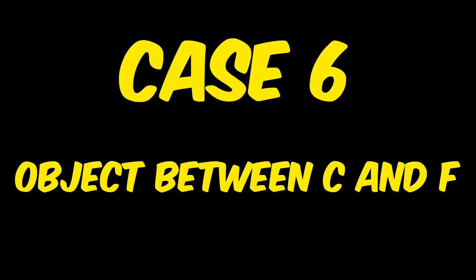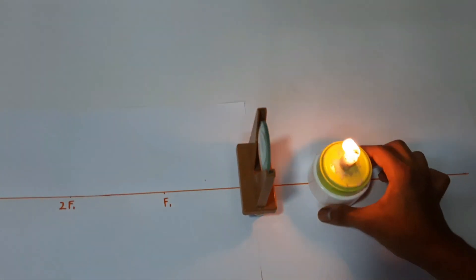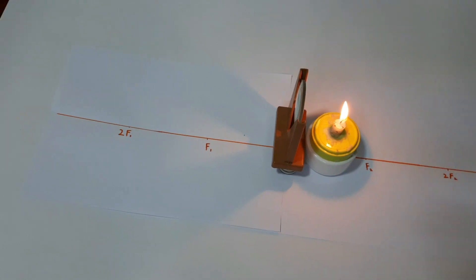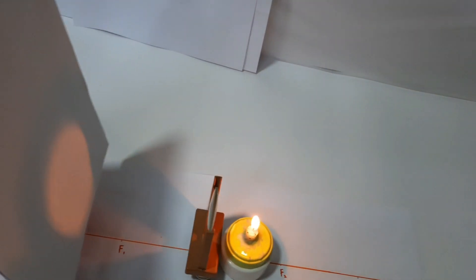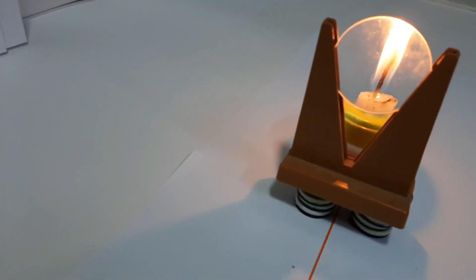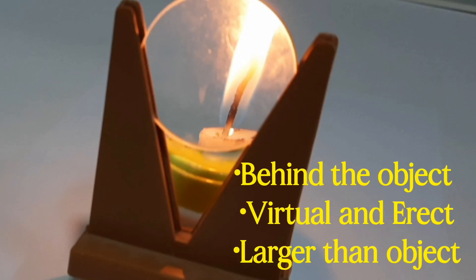In case 6, we will see when the object is placed between the optical center and focus. Here the image is formed behind the object and is virtual, erect and larger than that of the object.